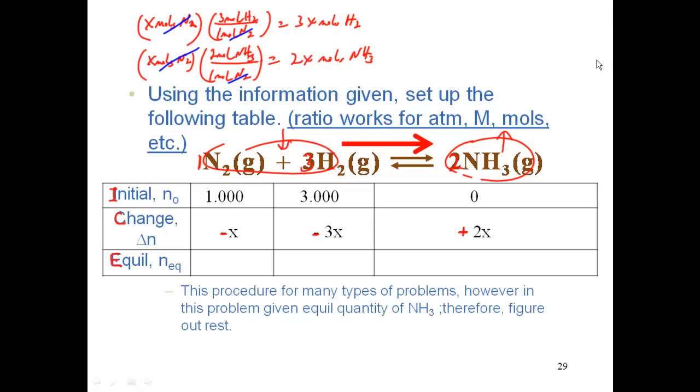Instead of going down to the smallest whole number ratio, we will use the coefficients and go directly. If there was a seven coefficient in front of the nitrogen, I would have 7x there. I will go with the coefficients and bring them down.